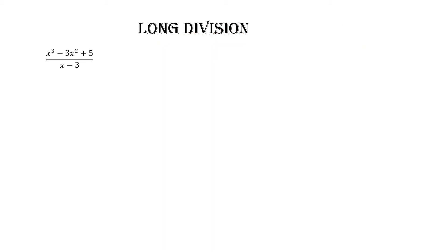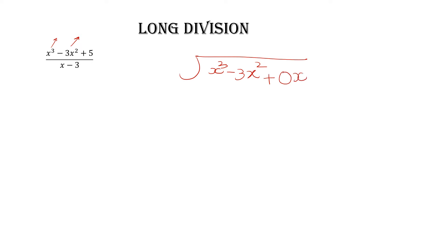Let's look at one more question: x³-3x²+5 divided by x-3. The numerator goes inside the division sign: x³-3x². Here you don't have any x term, so just write +0x to fill the missing degree. If you don't have any of the degrees coming in the middle of the question, always write it with a 0 coefficient. Then write plus 5. The divisor x-3 goes outside the division sign.